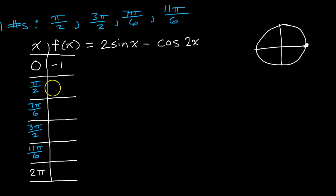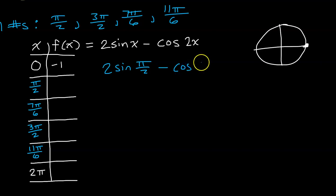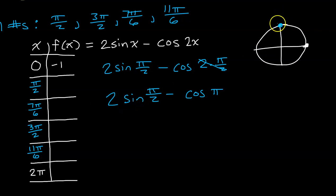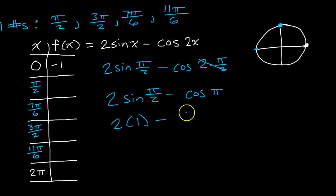At x = π/2: we compute 2 sin(π/2) − cos(2 · π/2) = 2 sin(π/2) − cos(π). Since π/2 is at the top of the unit circle, sin(π/2) = 1, giving 2(1). Cosine of π: π is on the left of the unit circle where the x-value is −1. So we get 2 − (−1) = 2 + 1 = 3.